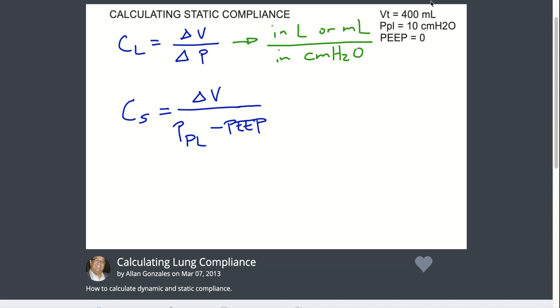So in this case, the example is a tidal volume of 400 mLs over 10 minus zero. You have 400 over 10, and your answer is 40 mLs per centimeters of water pressure.